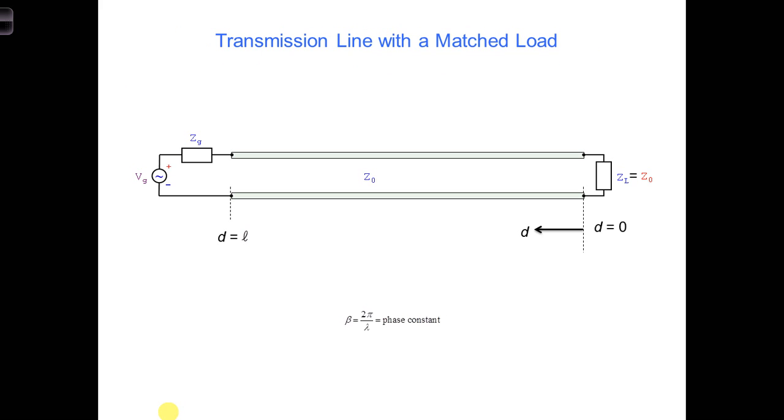Using this new coordinate system, let's start by considering a very simple scenario. Say we have a transmission line with a matched load. The source generates voltage and current waves that travel towards this load. When they reach the load, will we get any reflections from the load?